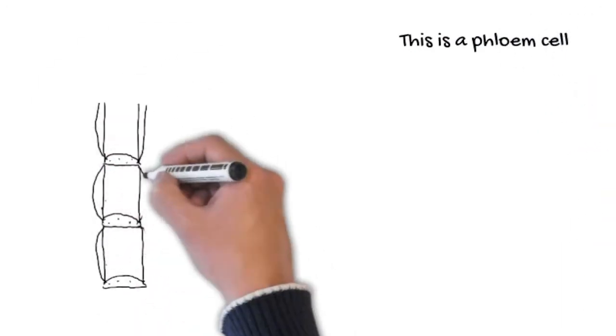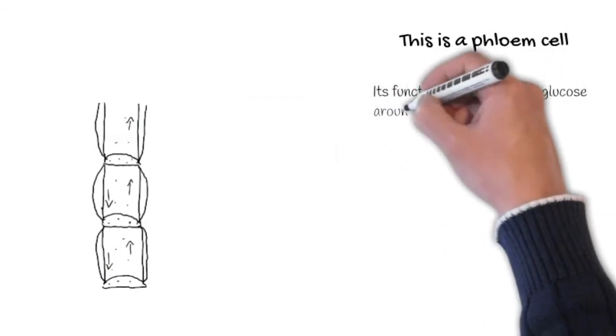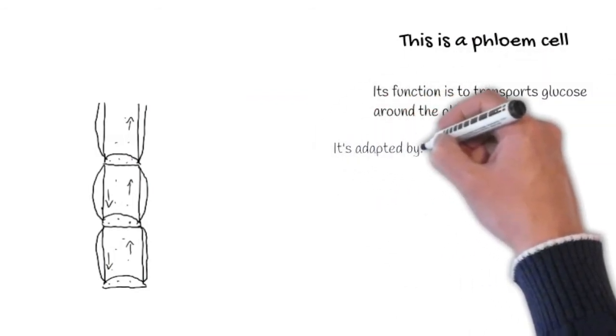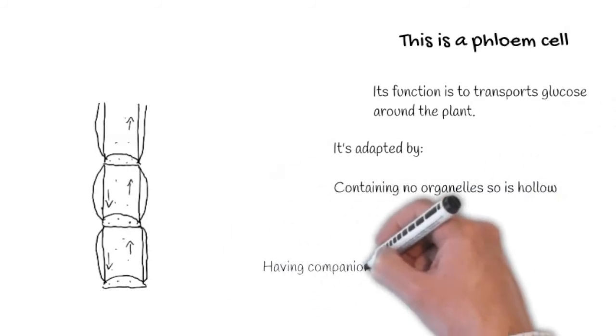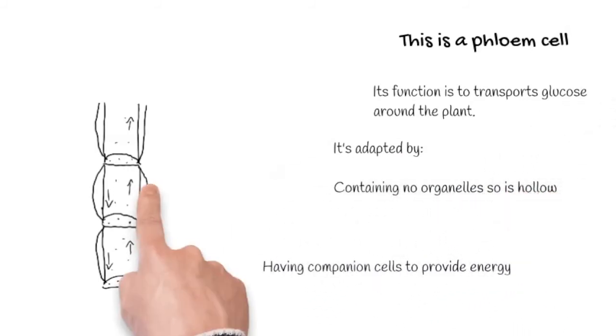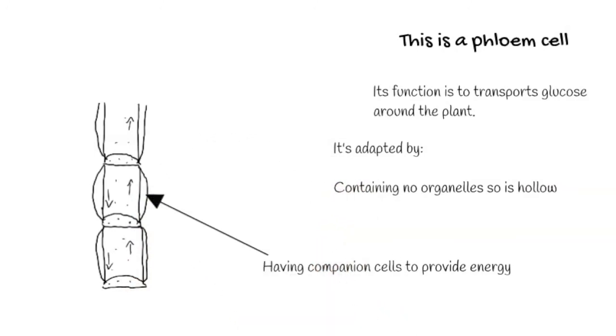Here is a phloem cell. Its function is to transport sugar around the plant. It is adapted by again containing no organelles to make it hollow for sugar to move through it. It also has companion cells to provide energy for the movement of the sugar by active transport.